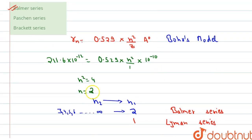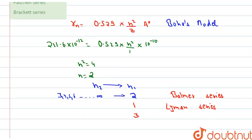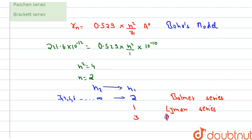Now if electrons come from any orbital to third orbital, then this is known as Paschen series, P-A-S-C-H-E-N Paschen series. And if electrons from any orbital come to 4, this is known as Bracket series.